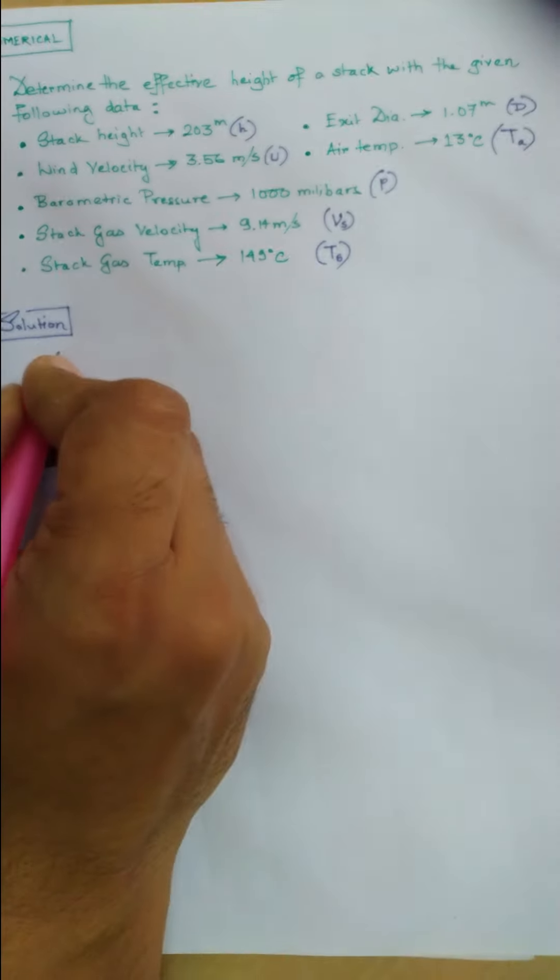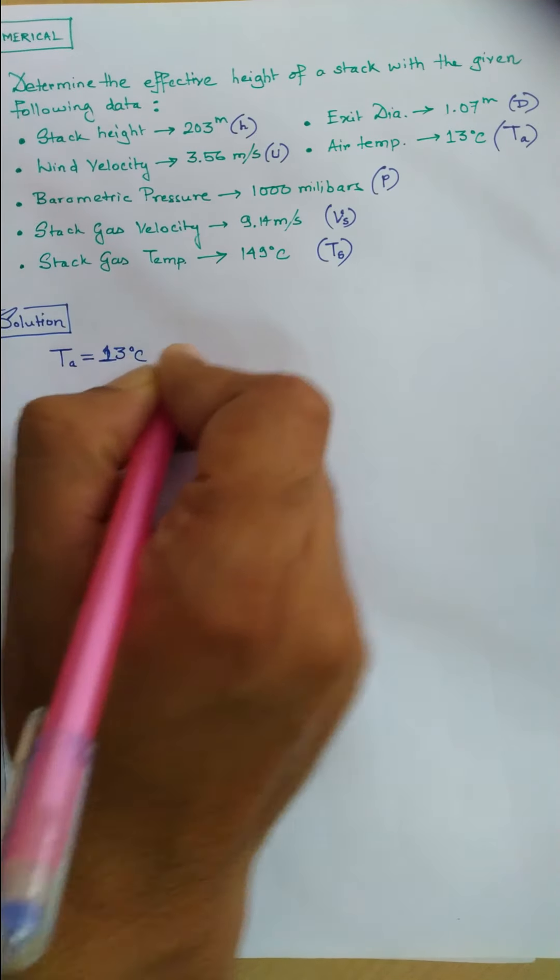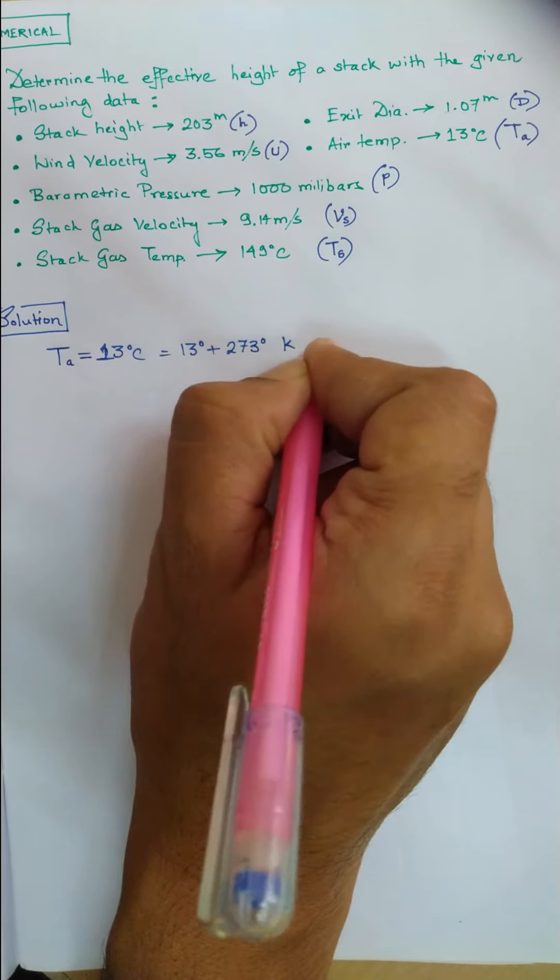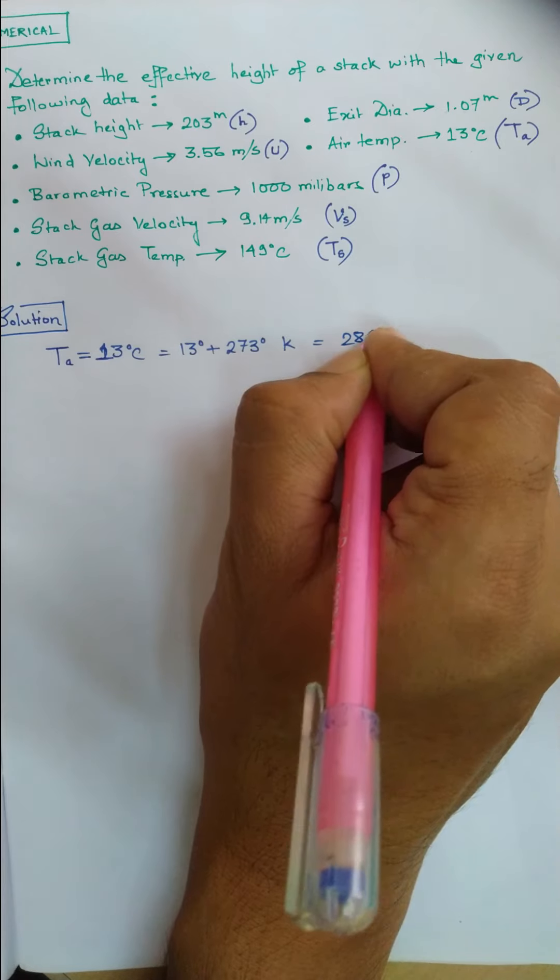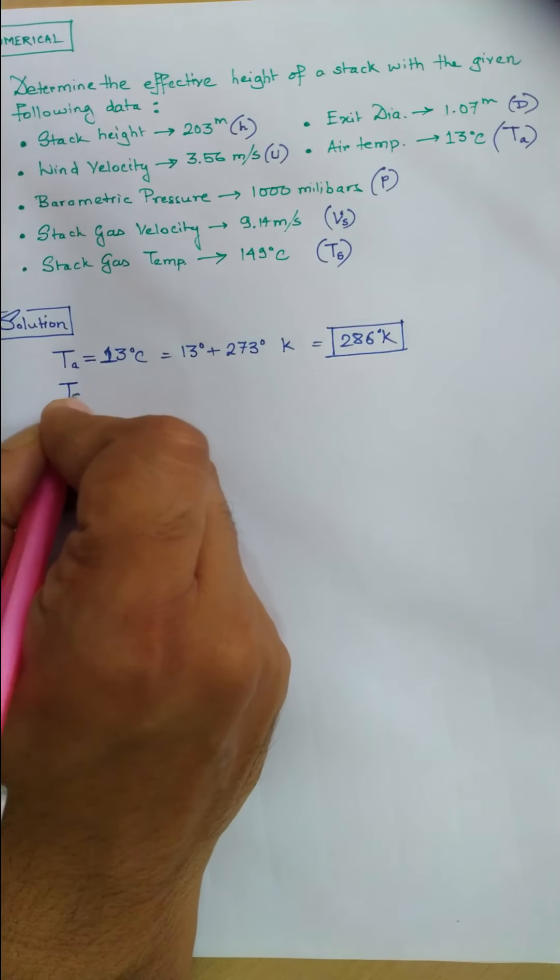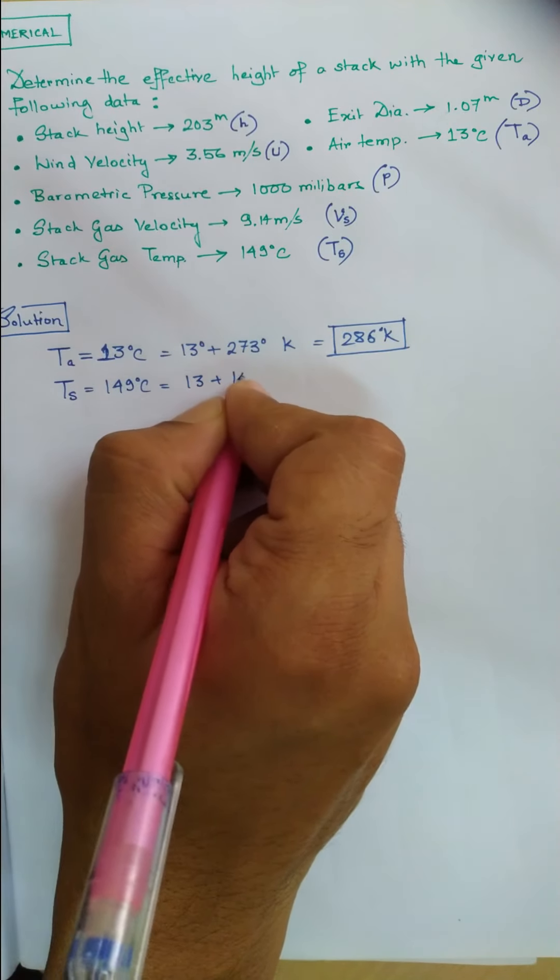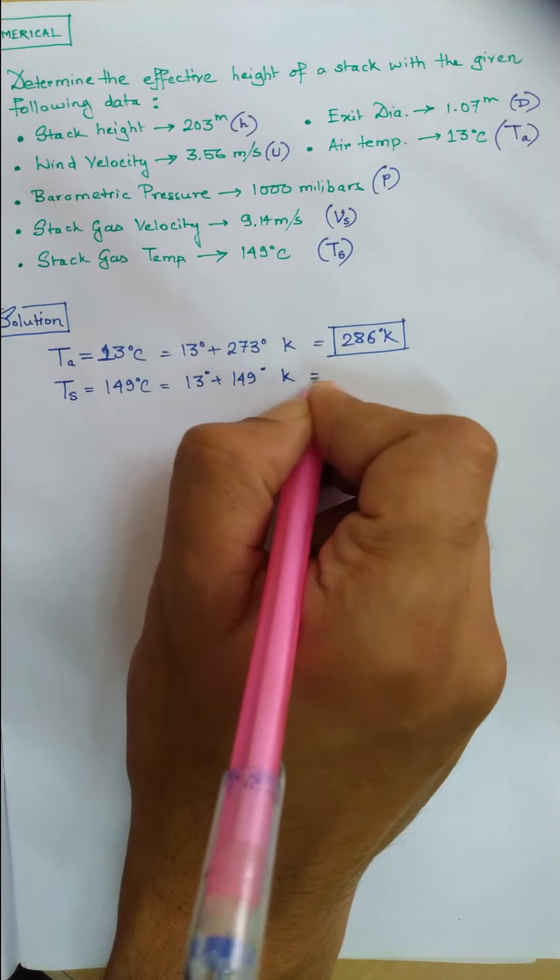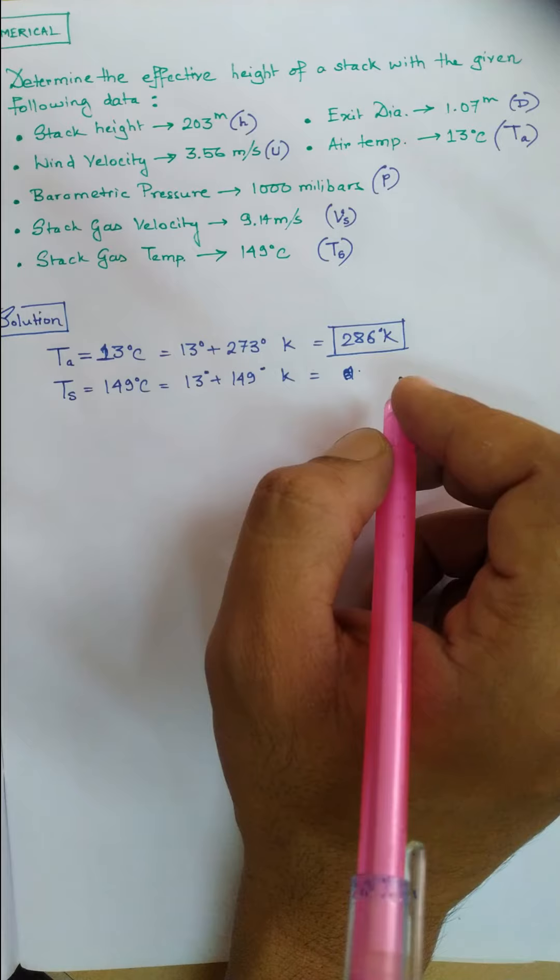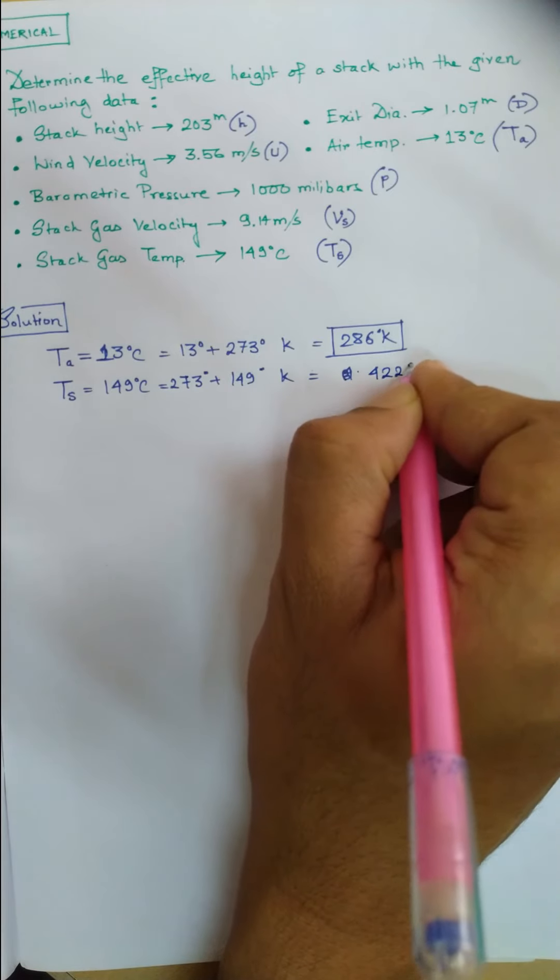So we convert: Ta equals 13 degrees Celsius, which is 13 plus 273, which equals 286 Kelvin. Similarly, we have Ts which is 149 degrees Celsius, which is 273 plus 149, which equals 422 degrees Kelvin.